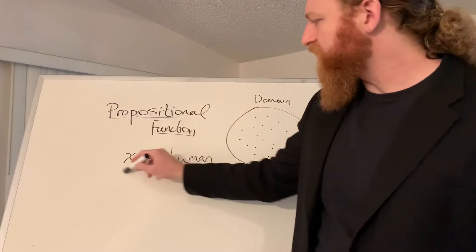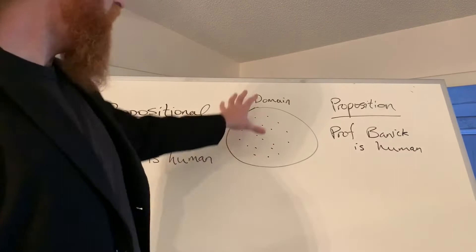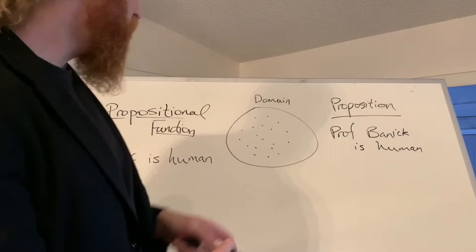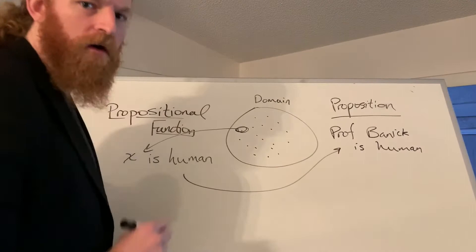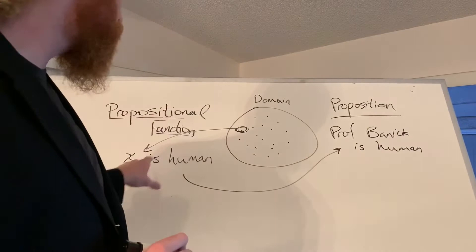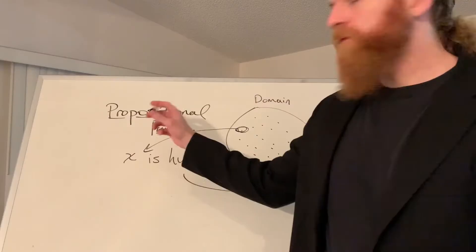We put an object in for X and then we get a fully formed proposition. We have a domain of things — let's say these are all the things in the universe. A propositional function is something that allows us to take one of these objects, put it into the propositional function, and out comes a fully-fledged proposition with a determinate truth value. So propositional functions are functions from the domain of objects to a proposition.